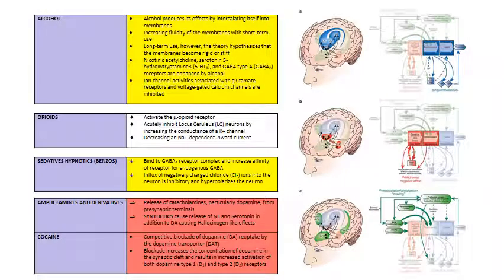This slide covers neurobiology across different substances. Alcohol works on a wide variety of receptors but causes significant damage by changing membrane fluidity with short-term use. With long-term use, it makes neuronal membranes rigid and stiff, leading to decreased neurotransmission — producing the depressant effect of alcohol.